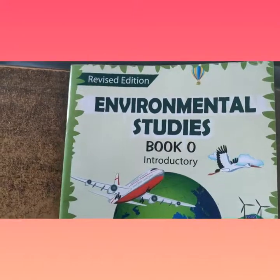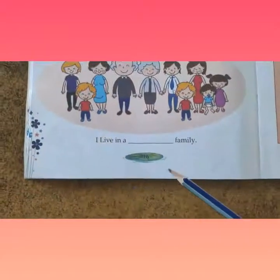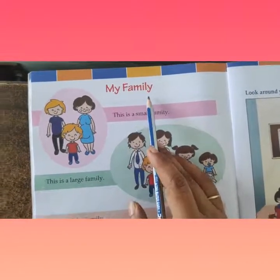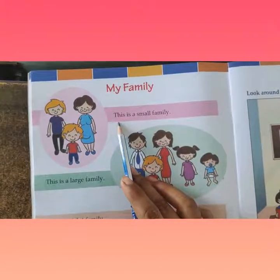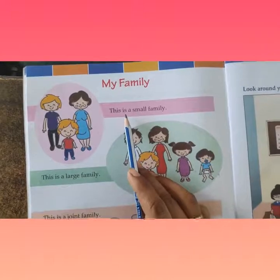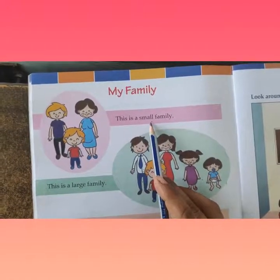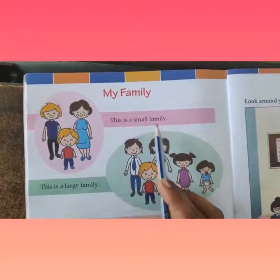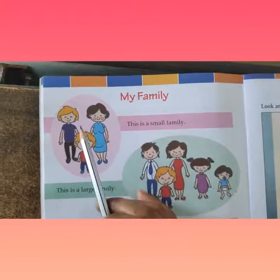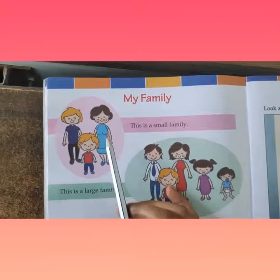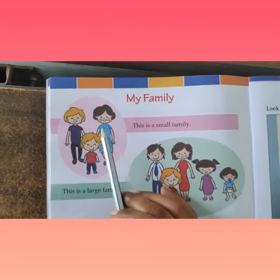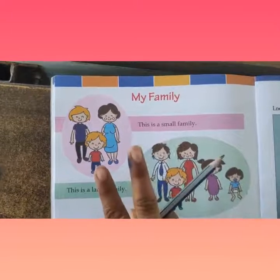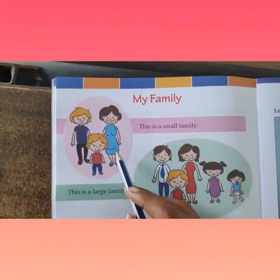In our previous book, on page number 16, today we will read about 'My Family.' This is a small family — he is father, she is mother, they are called parents. If parents have one or two children, that is called a small family.